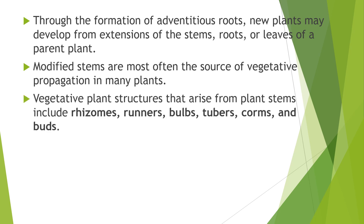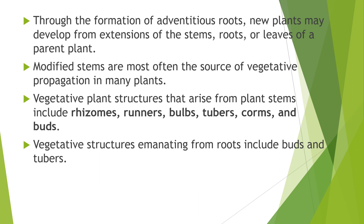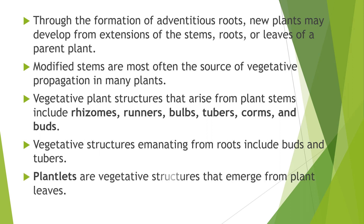Vegetative plant structures that arise from plant stems include rhizomes, runners, bulbs, tubers, corms, and buds. Vegetative structures emanating from roots include buds and tubers. Plantlets are vegetative structures that emerge from plant leaves. Runners — such as those of Fragaria (wild strawberry) — spread out over the soil to propagate the plant.